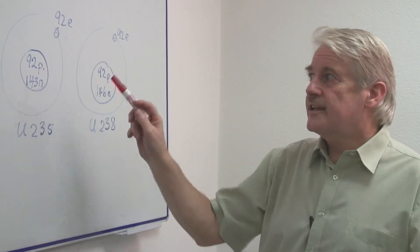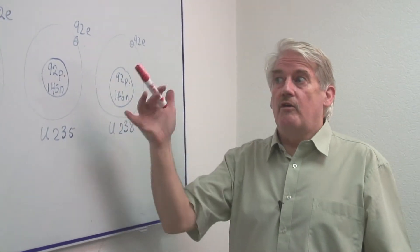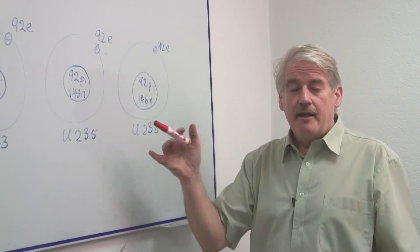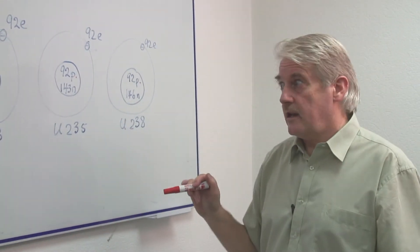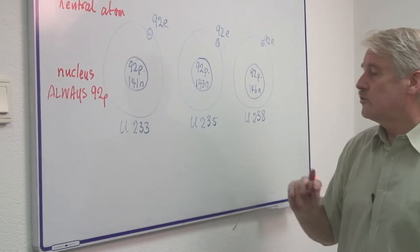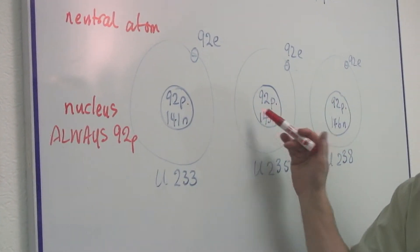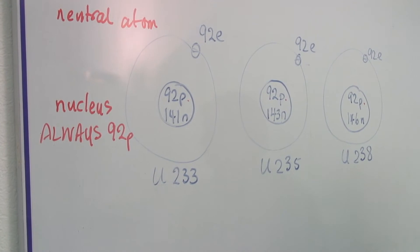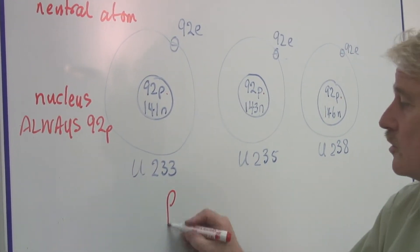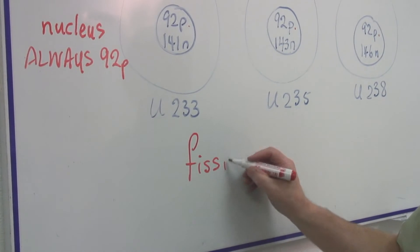Now the interesting thing is, these actually, although they're the same chemically, they behave different physically. Uranium two three three and uranium two three five are similar in physical characteristics. They produce fission. You get fission with both of these.